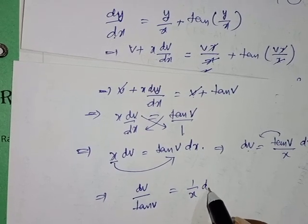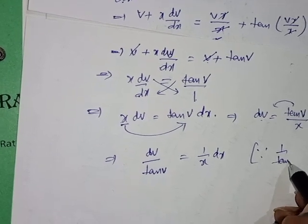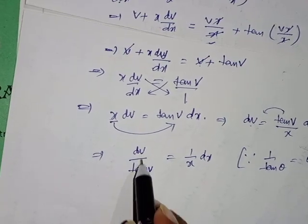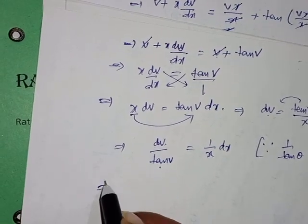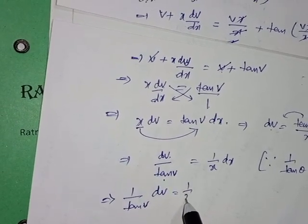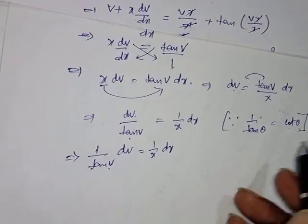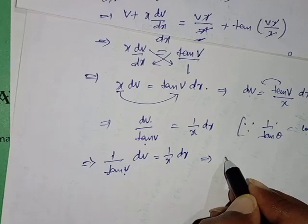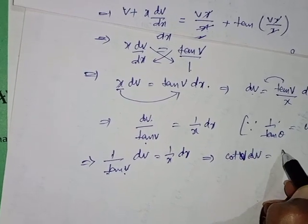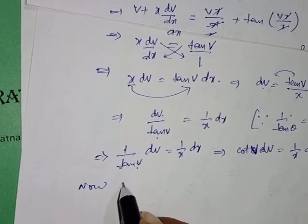We know that 1/tan(θ) = cot(θ). So 1/tan(v) = cot(v). Therefore, cot(v)·dv = (1/x)·dx.